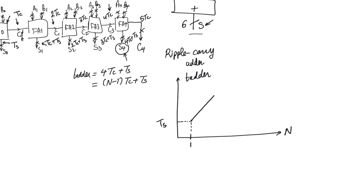Full adder has two delays, TS and TC. Its critical path is going to be TS. And then this increases linearly with n, and the slope is TC. So, even though TS might be larger than TC, TC is more important, because TC represents the slope of the delay curve when drawn against the number of input bits n.